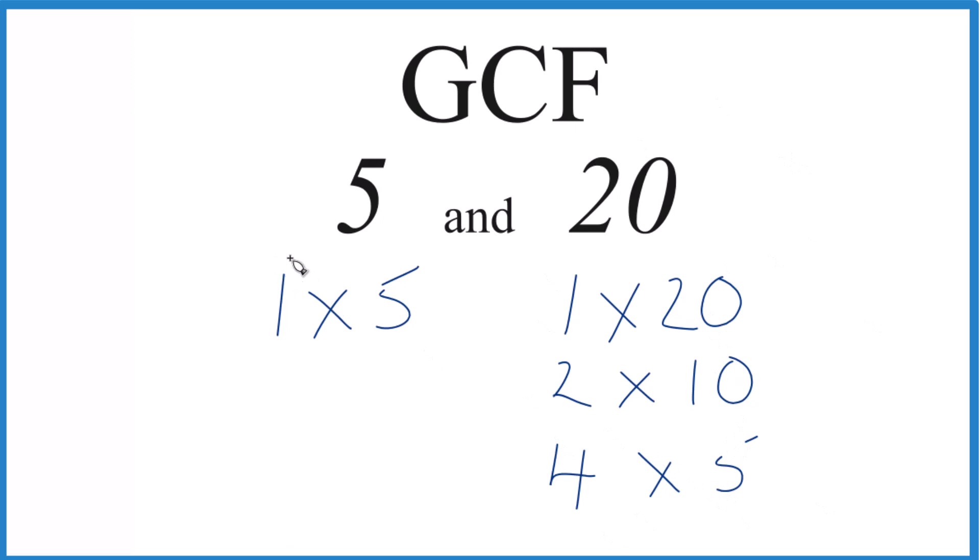So they have 1, that's a common factor. But there's an even greater factor. That's 5. Because 5 goes into 5 evenly and 20 evenly, and it's the greatest one here.